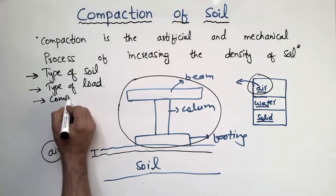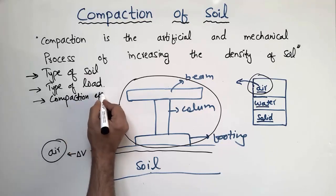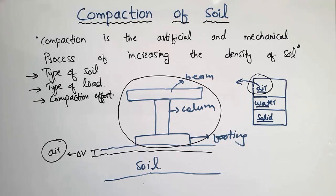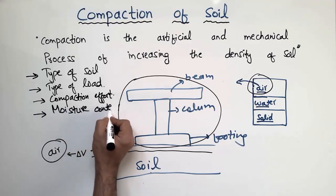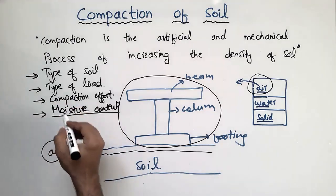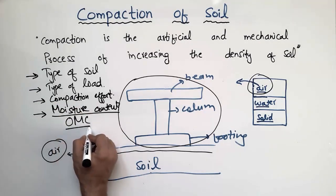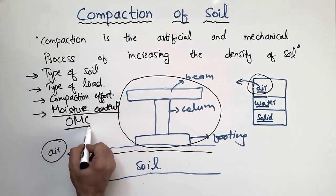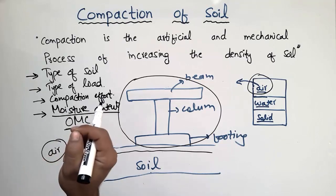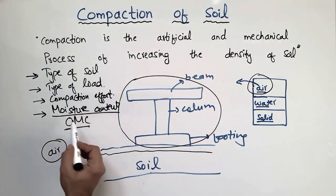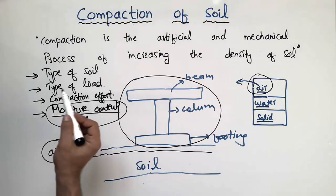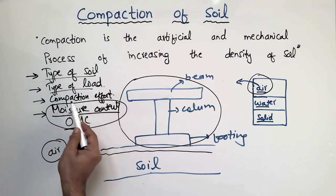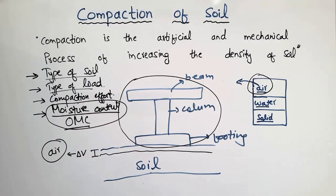The third factor is the compaction effort — the more degree of compaction achieved, the less deformability there will be in the soil mass. The fourth factor is the moisture content, which plays an important role in compaction. The moisture content should be at the optimum moisture content, or OMC, to achieve the maximum dry density and maximum compaction. Without optimum moisture content, the soil mass will be susceptible to deformability. So the key factors are: type of soil, type of load, compaction effort, and moisture content.